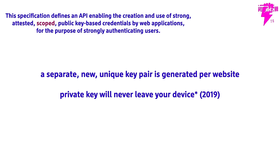The credentials are scoped - and this is really interesting. A key pair is generated per website. So if you log in and register a WebAuthN key set for Google, your device will not reuse it for Amazon. Your private key will never leave your device. You're only handing out public keys. This is cool from a privacy side: when someone finds your public key in a leaked server database, they have no idea if you used it elsewhere - because you can't by the spec.